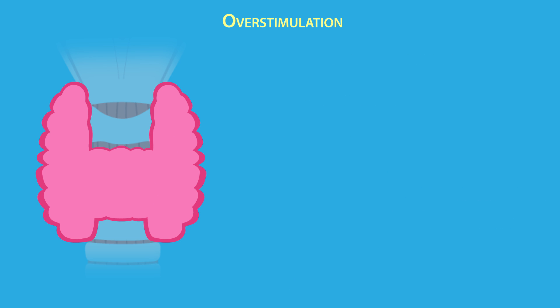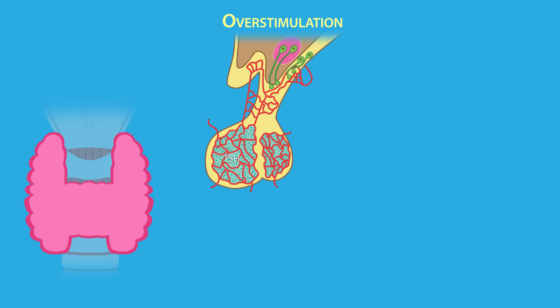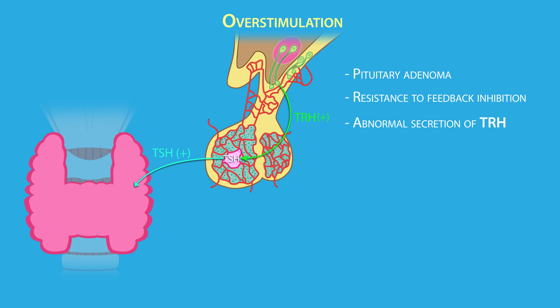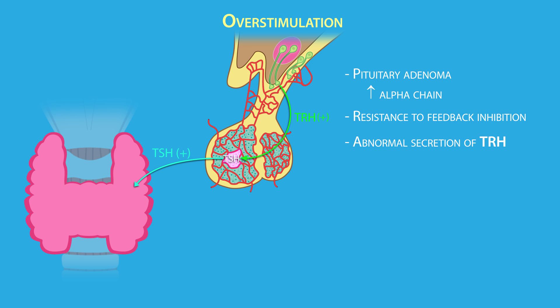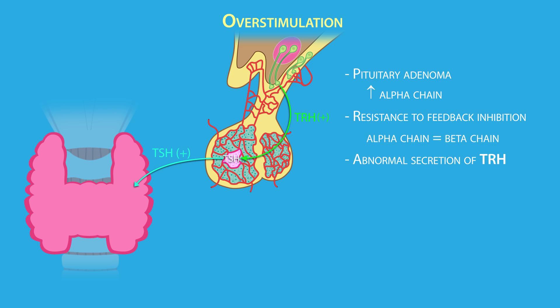Overstimulation of the thyroid gland can also lead to hyperthyroidism, though it is rare. It can be caused by inappropriate secretion of TSH from a TSH-secreting pituitary adenoma, resistance to feedback inhibition by T3 and T4, or abnormal secretion of thyrotropin releasing hormone. Hyperthyroidism caused by a TSH-secreting adenoma results in an increase in the alpha subunit of TSH over the beta subunit, while lack of feedback inhibition results in equal serum alpha and beta chain levels.